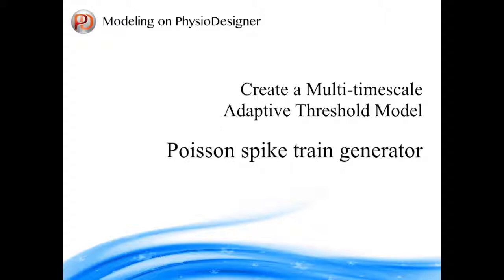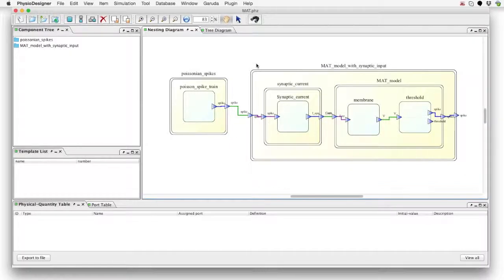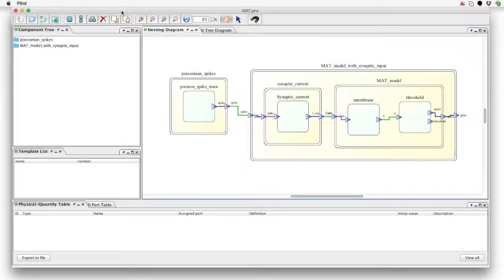In this movie we are going to create a stimulus spike generator which outputs a Poisson spike train. In this module, several tricky techniques are used which are applicable to other modeling situations. The MADT model is composed of the stimulus spike generator, synaptic current generator, and MADT model.